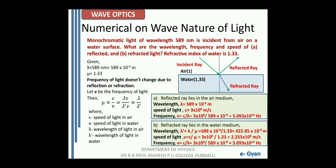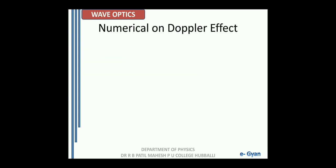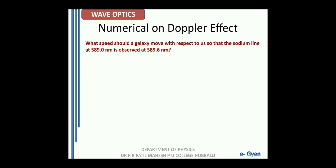Write it down once to understand the steps and calculate by yourself. Let us go with the next numerical on Doppler effect. What speed should a galaxy move with respect to us so that the sodium line at 589.0 nanometer is observed at 589.6 nanometer? So we have a sodium line whose wavelength is 589 nanometer but due to the relative motion between us and the galaxy, the sodium line appears to have a wavelength of 589.6 nanometer.